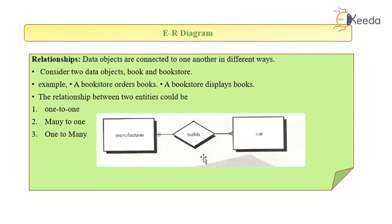Relationship: the connection between two elements is called a relationship. The relationship can be specified by using examples like a bookstore orders books, a bookstore displays books. So that is the relationship.